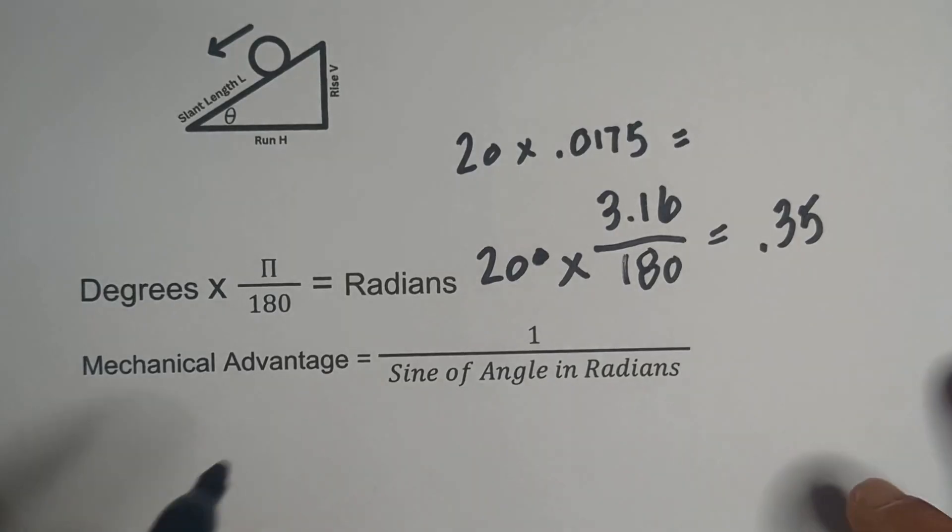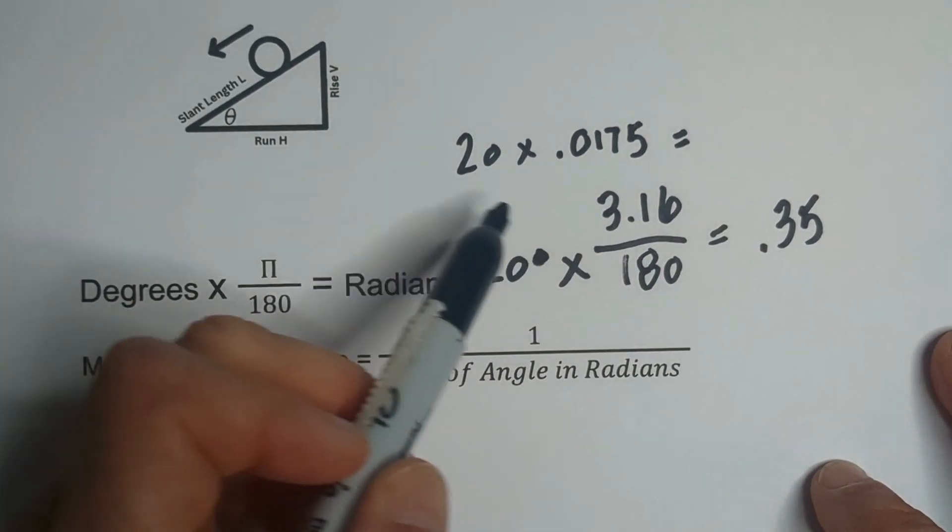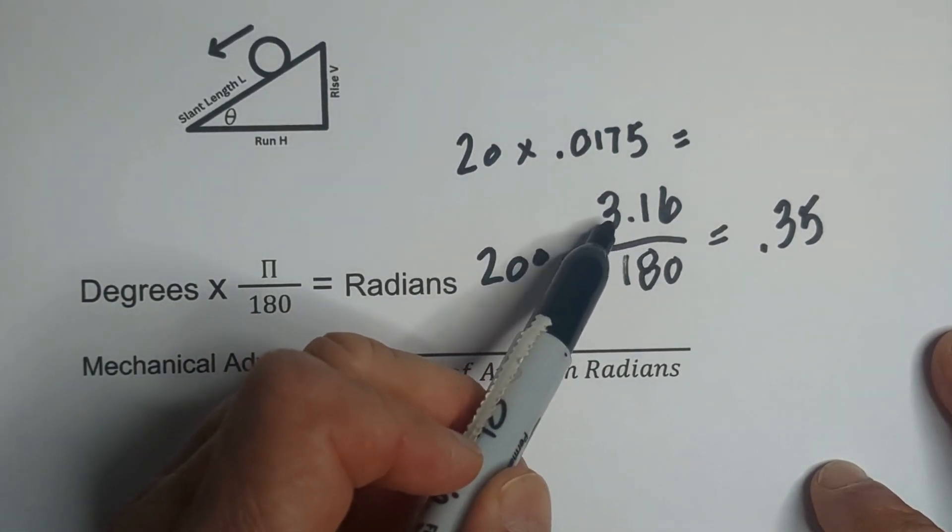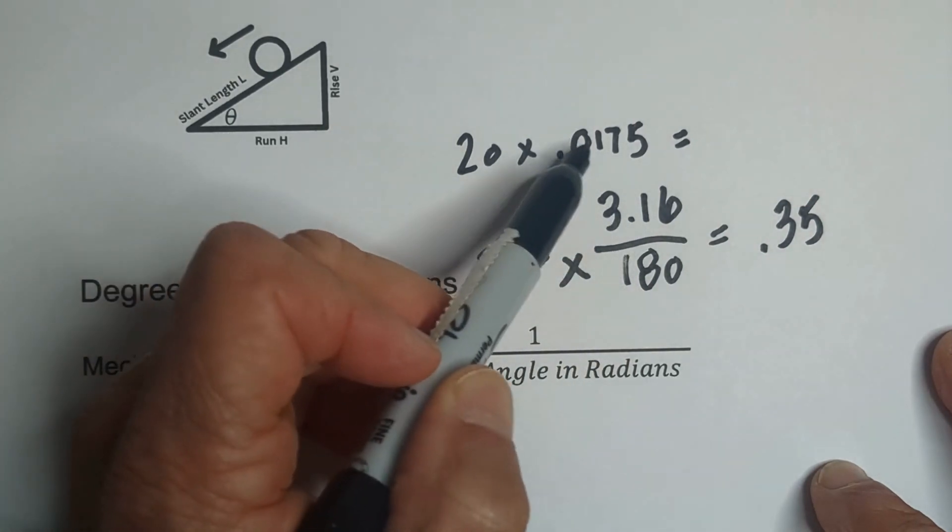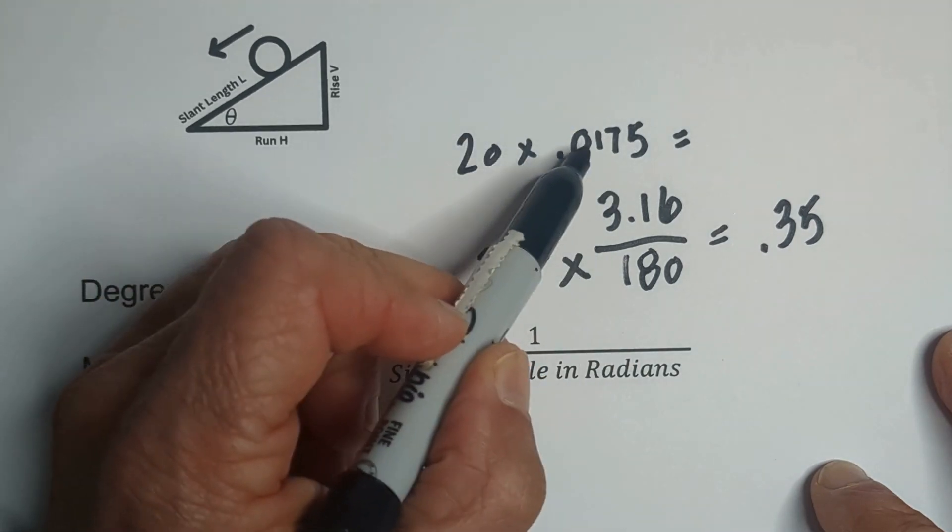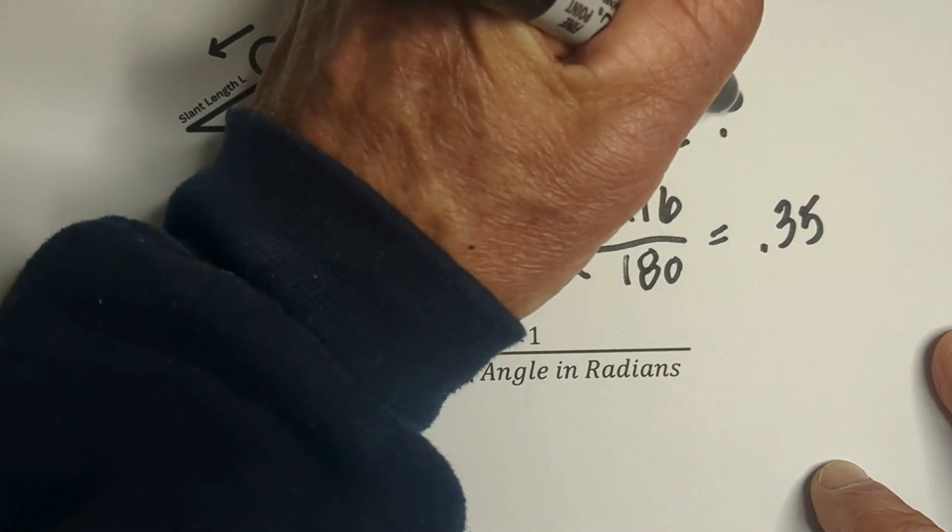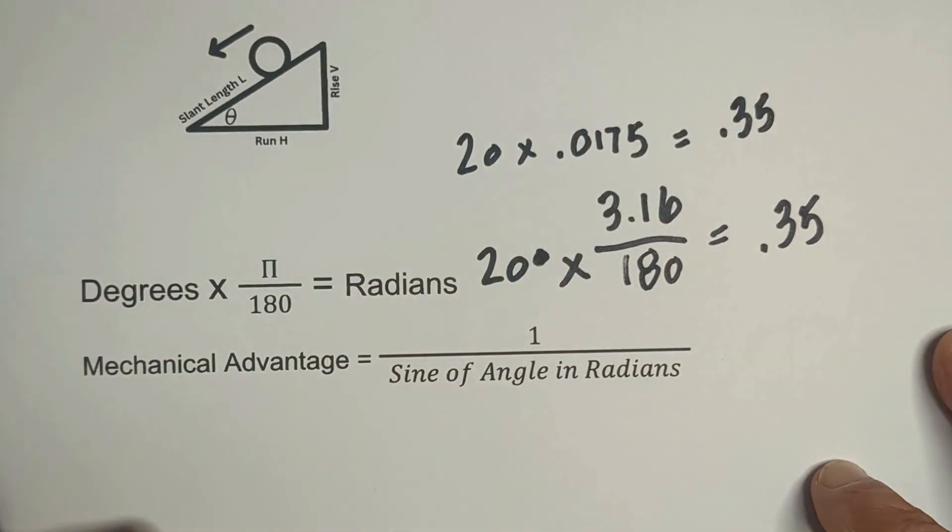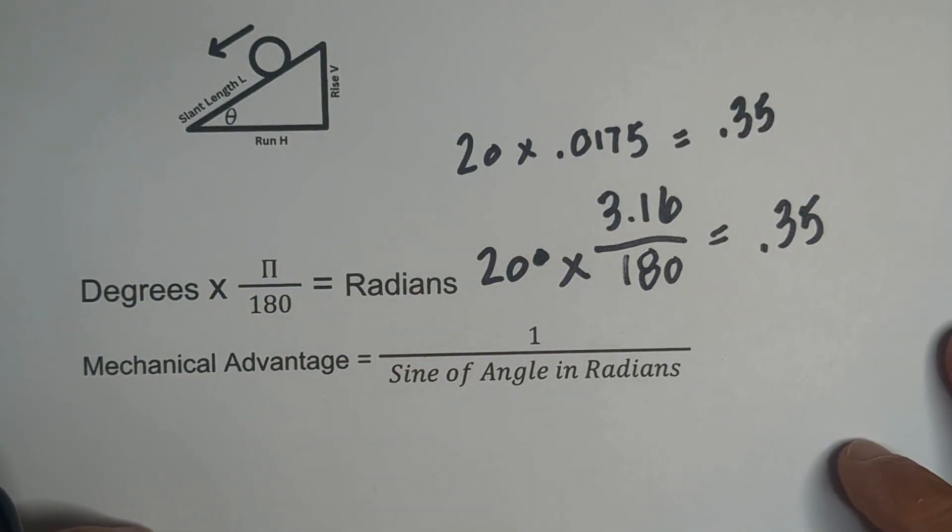Let me give you just a little bit more detail. When you divide 3.16, or pi, by 180, you get 0.0175. And then when you multiply 20 times 0.0175, that's where you get, and I am rounding to two places, the 0.35.